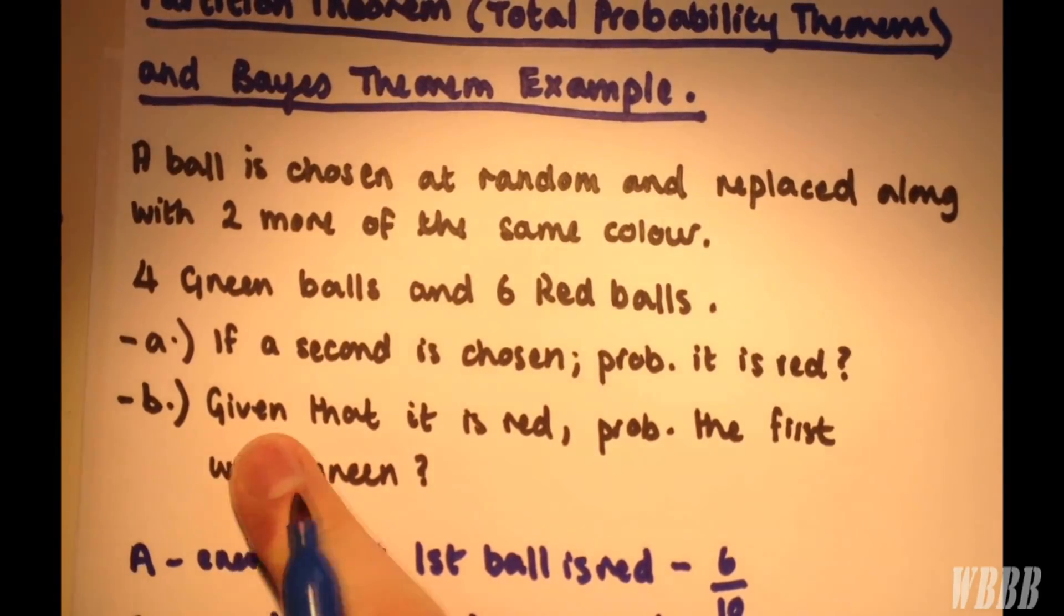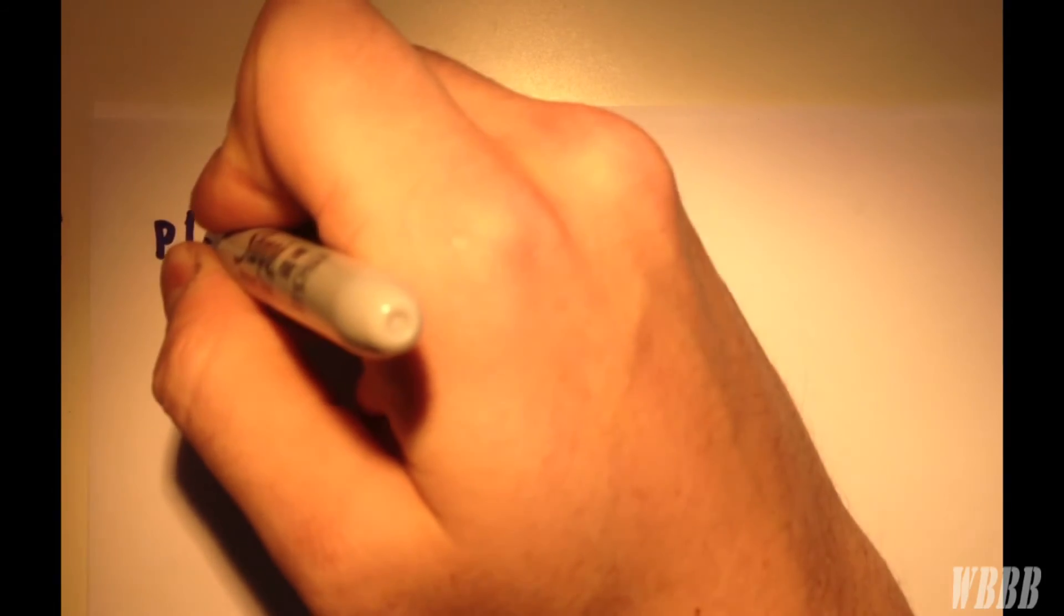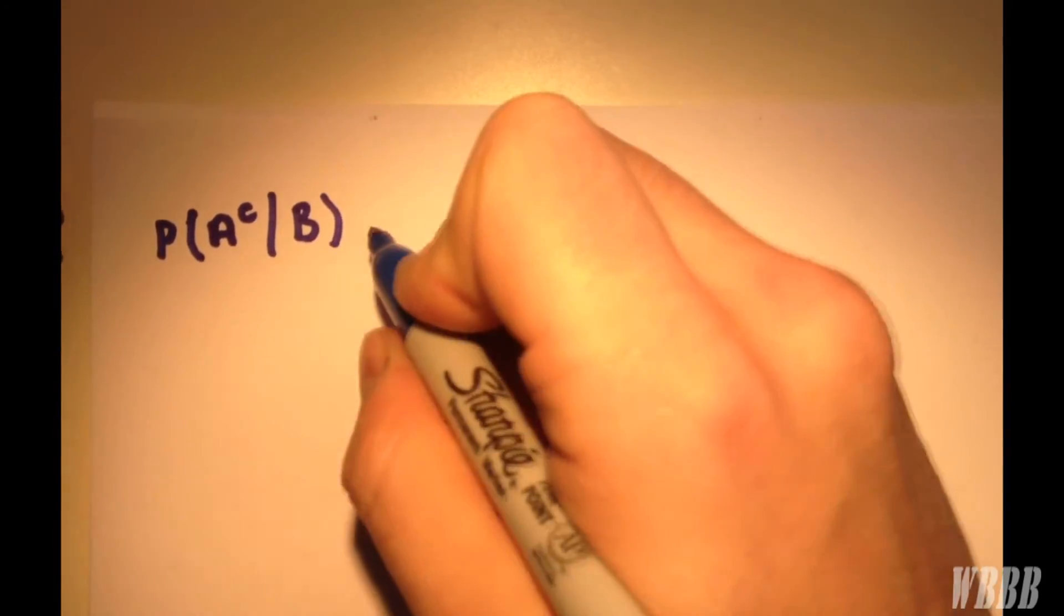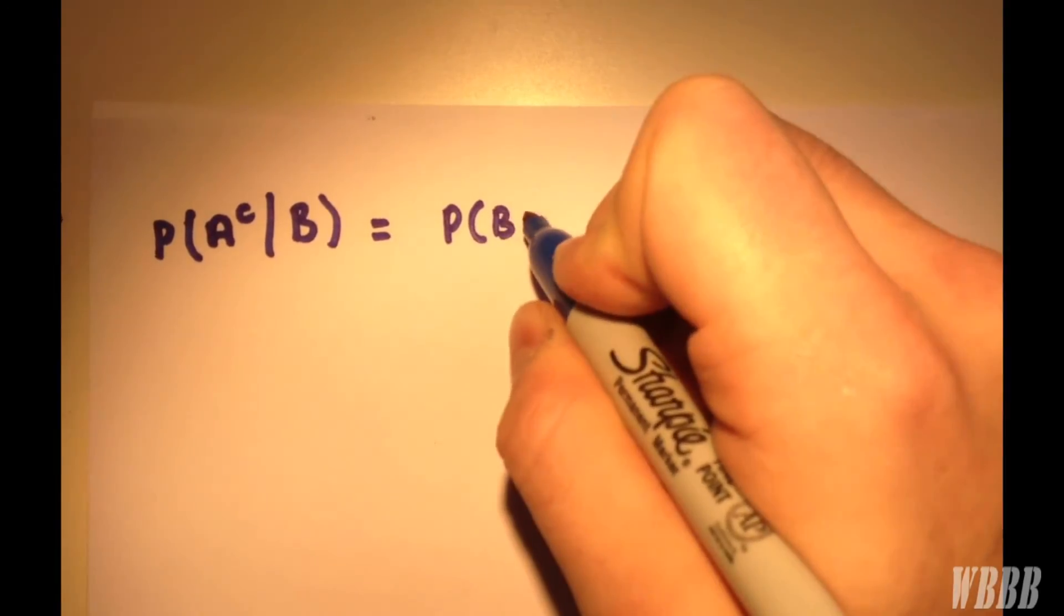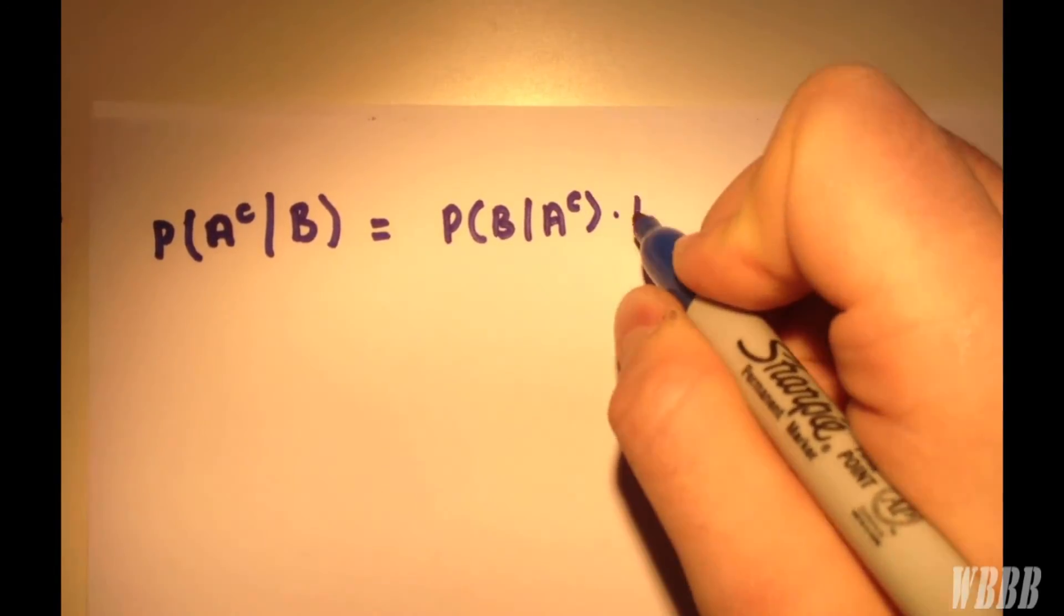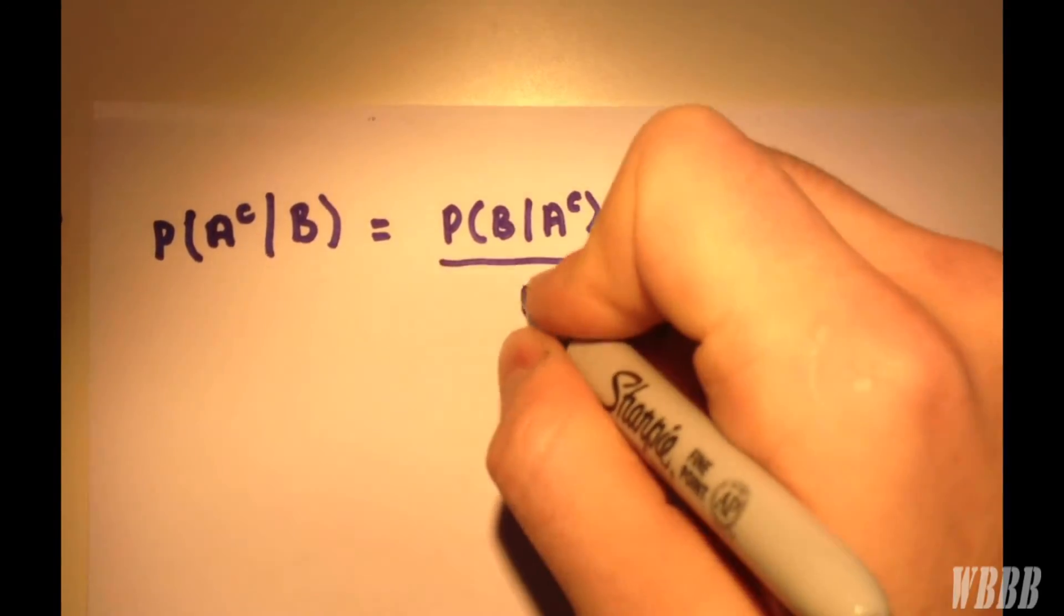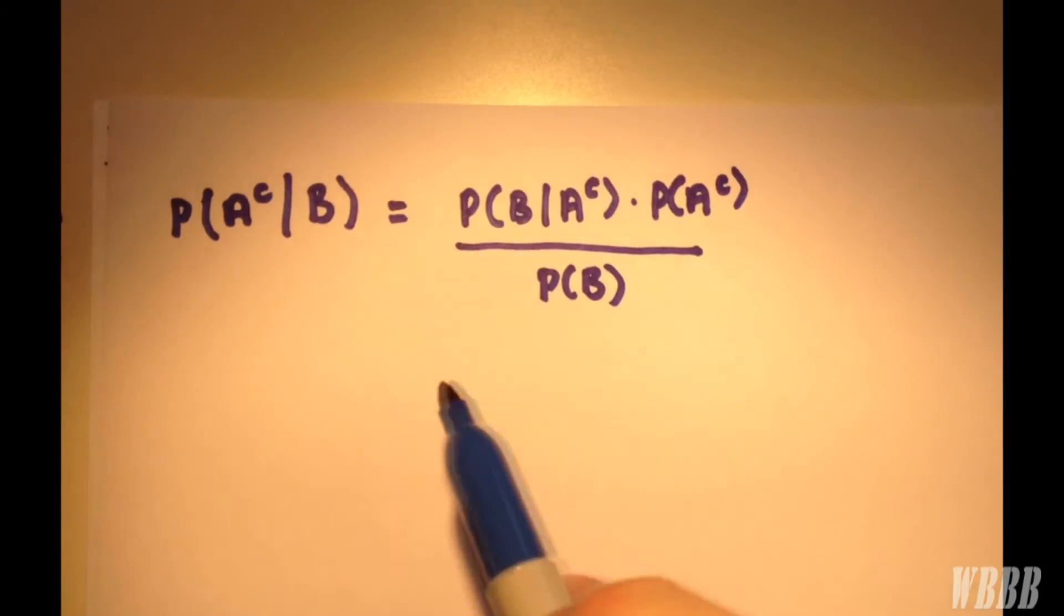Bayes' theorem is as follows: the probability that the first wasn't red, given that we draw a red the second time. A very cool way of remembering Bayes' theorem is if you see A|B, we have A|B here, and we simply reverse it to B|A here.